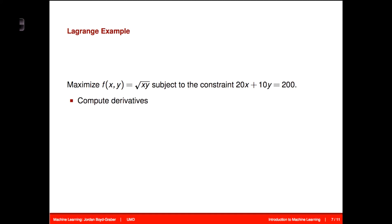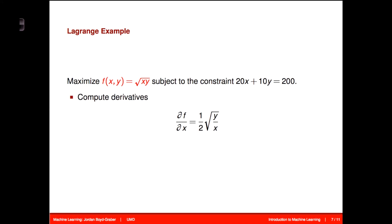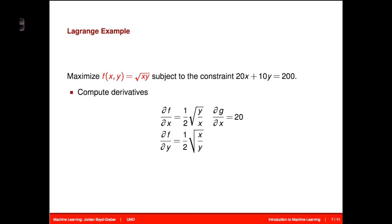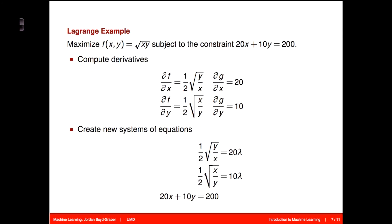Let's see an example of this. Let's say that you want to optimize the square root of x times y subject to the constraint that 20x plus 10y equals 200. So the first thing we're going to do is compute partial derivatives of this. First, we take the partial derivative of f with respect to x and this gives us 1/2 square root of y over x. Now we'll take the partial derivative of the constraint g with respect to x, the same variable, and that gives us 20. And now we'll take the partial derivative of f with respect to y—that gives us the square root of x over y times 1/2. And then the partial derivative of the constraint function g with respect to y gives us 10. So now we have a system of equations where we're going to take 1/2 the square root of y over x equal to 20λ, and then 1/2 square root of x over y equal to 10λ. And we then have the constraint function by itself: 20x plus 10y equals 200.